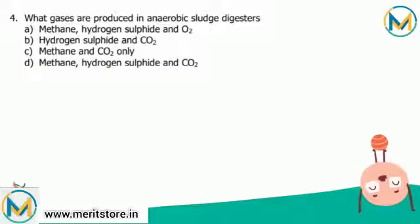Hydrolysis breaks compounds into small molecules by dissolving them into solution. Acidogenesis results in further breakdown by acidogenic, or fermentative, bacteria. Simple molecules are then digested by acetogens to produce largely acetic acid, carbon dioxide, and hydrogen. The final step, methanogenesis, is where methanogens convert these into methane, carbon dioxide, and water.